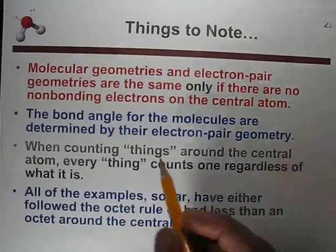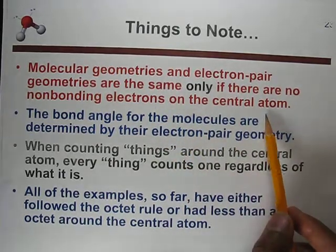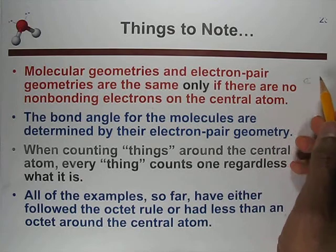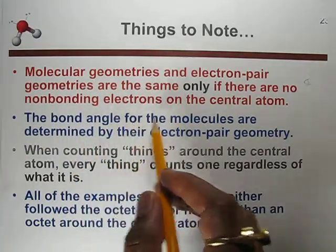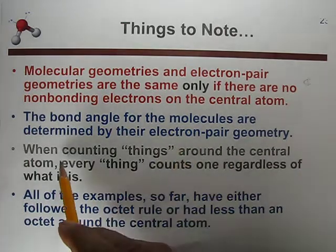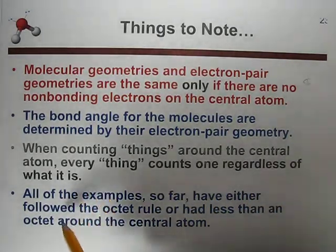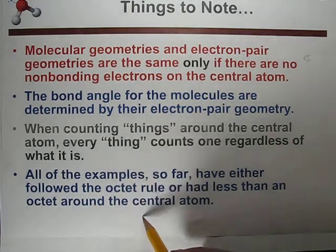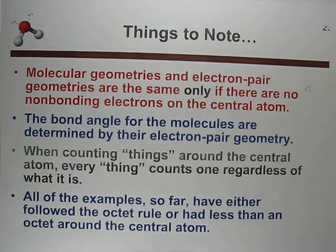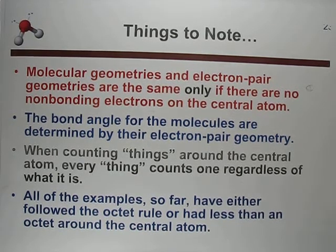Key things to remember: molecular geometry and electron pair geometry are the same only if there are no non-bonding electrons on the central atom. The bond angle of the molecule is determined by the electron pair geometry. When counting things around the central atom, everything counts regardless of what it is. All examples so far have followed the octet rule or had less than an octet around the central atom. In the next video, we will study AB5 type geometry.